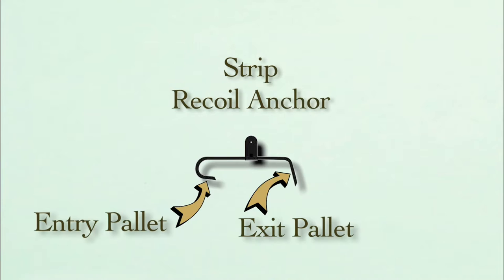Next, there are only two working surfaces or pallets that contact the escape wheel teeth, one on the entry side and one on the exit side of the anchor. Notice that the pallet surfaces are flat.